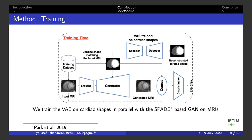To summarize, our approach encapsulates a variational autoencoder that learns the latent space of valid cardiac shapes, and a generator that transforms cardiac shapes to realistic MR images.